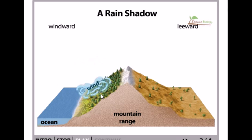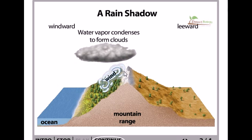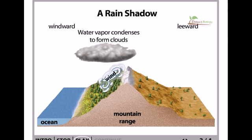Because cool air can carry less water vapor than warm air, the water molecules begin to be released onto the peak of the mountain — throughout this mountain region. They form tiny droplets, forming clouds, and the rain starts to fall.